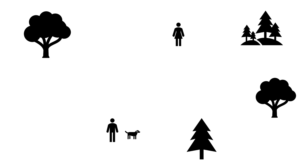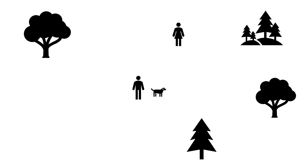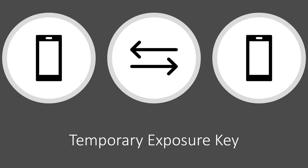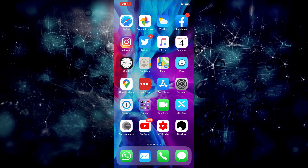The basic idea about contact tracing is that when two people with the app come in close contact with each other, your phones will exchange anonymous Bluetooth information called a temporary exposure key. If later on somebody you came in contact with tests positive for COVID-19, you can then take the appropriate action as you'll get notified on your phone.